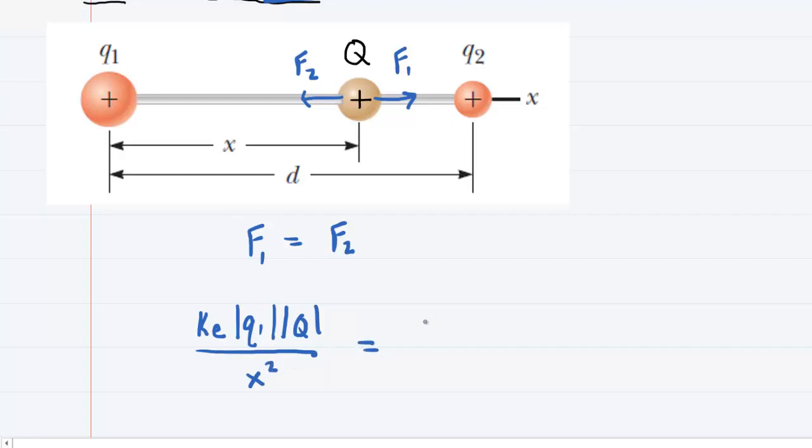This will equal on the other side the electric force between Q and Q2. So we would have the constant ke multiplied by the magnitude of charge Q2 multiplied by the magnitude of charge on capital Q, and then we'll divide that by the distance between those two charges squared. Now look very carefully, the distance between capital Q and Q2 is this distance right here. We can hopefully see that that distance would be d minus x. So we'll plug in d minus x, don't forget to square it.